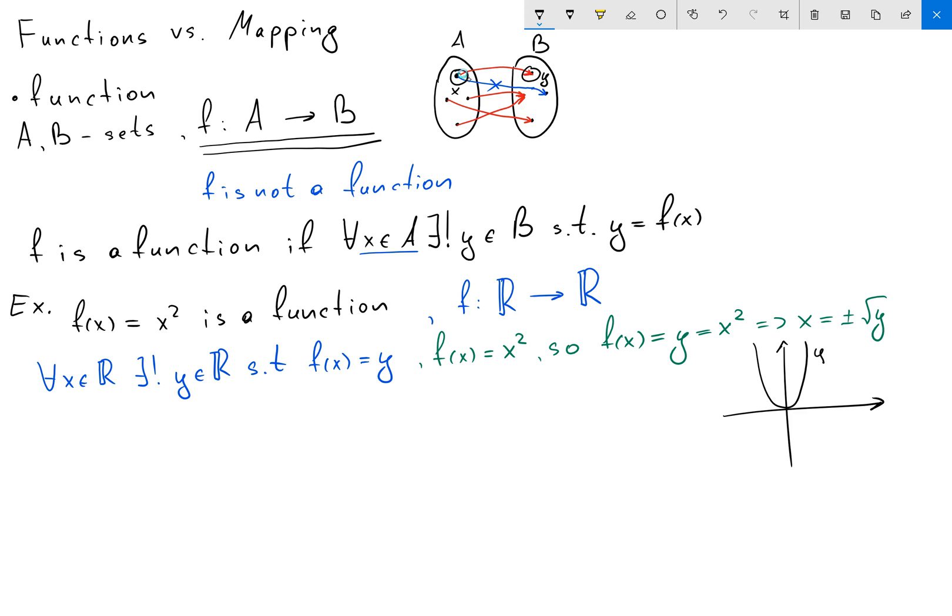This is our parabola y = x², and we can see if we're going to choose one element here, for example element 1 on the x-axis, for this element we're going to have only one corresponding element y belonging to ℝ. So from here follows that f(x) is a function.